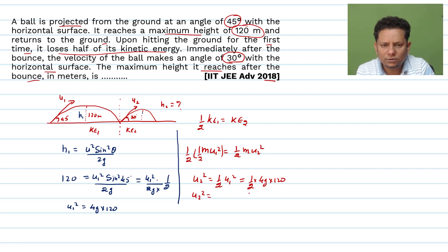So that means u2 squared will be equal to 2g multiplied by 120. So let's call this equation 1.